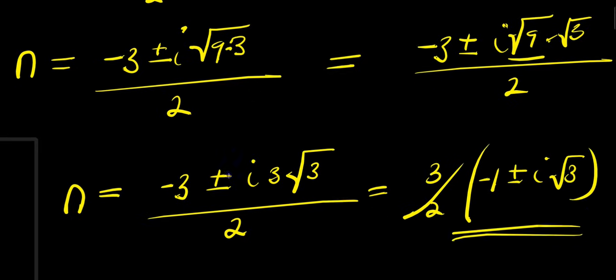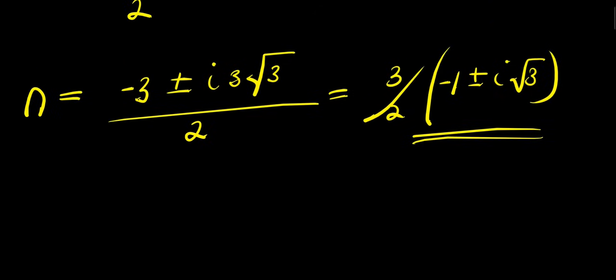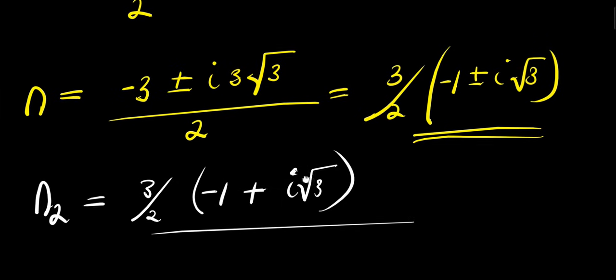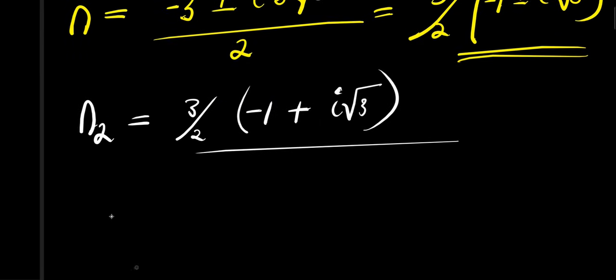So you have two complex values for n. We have n₂ = (3/2)(-1 + i√3), and also we have n₃ = (3/2)(-1 - i√3).